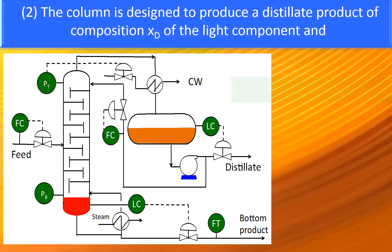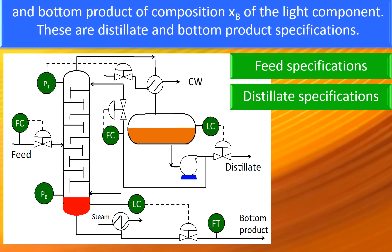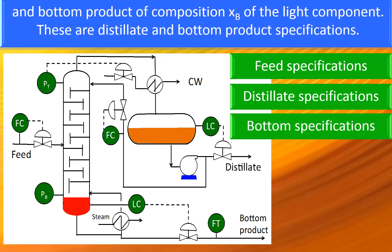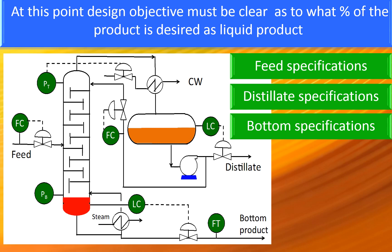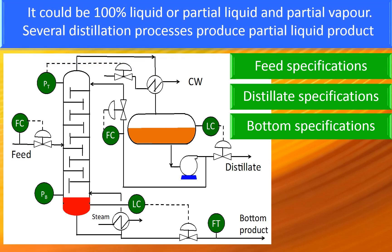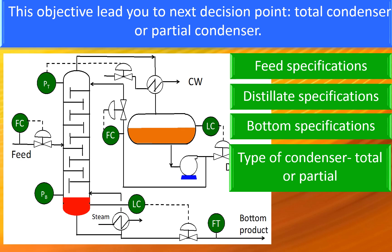The column is designed to produce a distillate product of composition XD of the light component and a bottom product of composition XB of the light component. These are the distillate and bottom product specifications. The design objective must be clear as to what percentage of the product is desired as liquid product — it could be 100% liquid or partial liquid and partial vapor. Several distillation processes produce partial liquid product, which leads to the next decision point: total condenser or partial condenser.